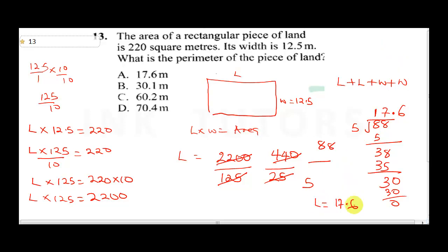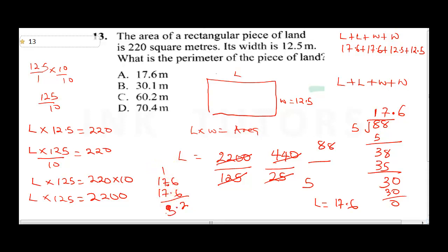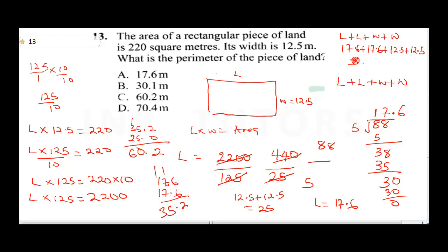So the length is 17.6 meters. The perimeter is: 17.6 plus 17.6 plus 12.5 plus 12.5. Adding 17.6 plus 17.6 gives 35.2. Adding 12.5 plus 12.5 gives 25.0. Then 35.2 plus 25.0 equals 60.2 meters. The correct answer is C.